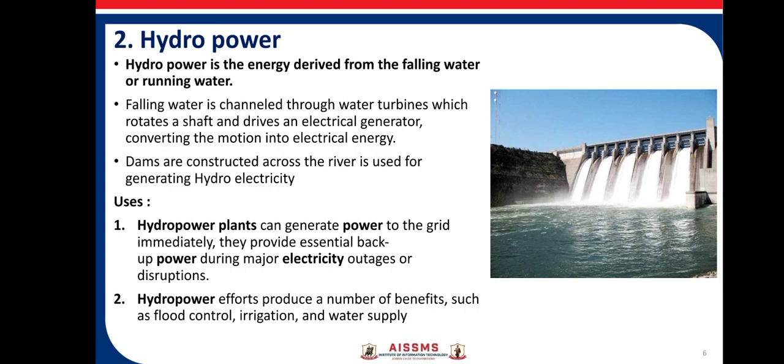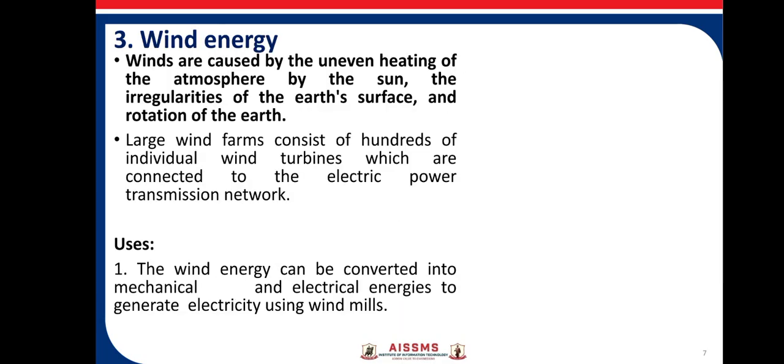The uses of hydropower: First, hydropower plants can generate power to the grid immediately. Second, they provide essential backup power during major electricity outage or disruption. Hydropower also produces a number of benefits such as flood control, irrigation, and water supply.